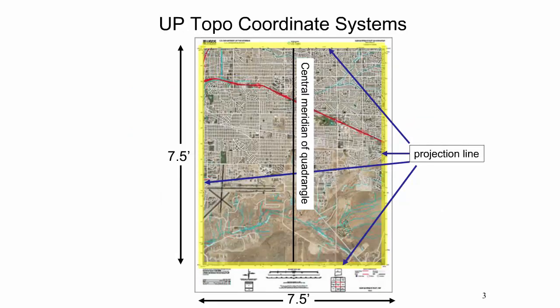Each U.S. topo quadrangle extends 7.5 minutes in north-south and east-west directions along meridians and parallels. The central meridian of the quadrangle, which is not to be confused with the central meridian of the UTM Projection Zone, is set parallel to the left and right edges of the PDF image file. The map interior is enclosed with meridians and parallels, and these bounding edges are called the Projection Line. The west and east edges of the Projection Line are almost, but not exactly, parallel to the left and right edges of the PDF image file.